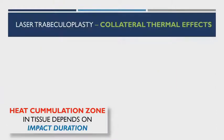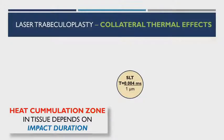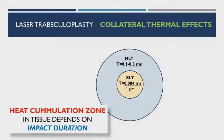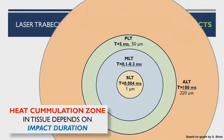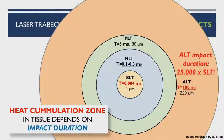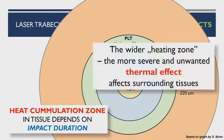Besides spot size, energy, and repeatability, a very important issue is impact duration. Impact duration is directly responsible for the heat accumulation zone around the laser impact as energy spreads to tissue. In SLT, the heat accumulation zone is very small — only one micrometer — because the impact duration is really short: 0.004 milliseconds. It's bigger in MLT, even bigger in PLT at 550 micrometers. In ALT, the collateral thermal effect is huge and covers all the trabecular meshwork, because ALT's impact duration is 25,000 times longer than SLT's. The wider the heating zone, the more severe and unwanted thermal effects on surrounding tissue.